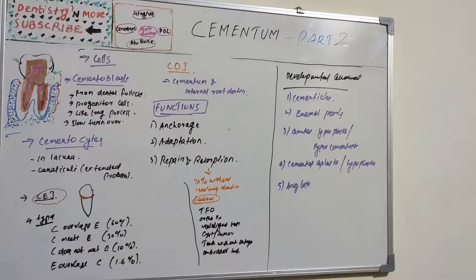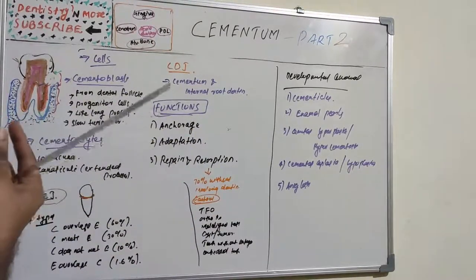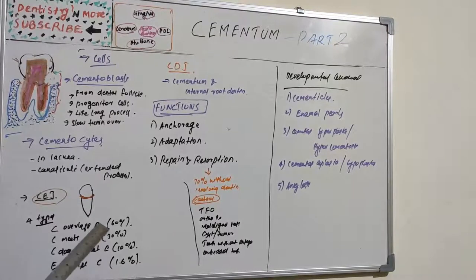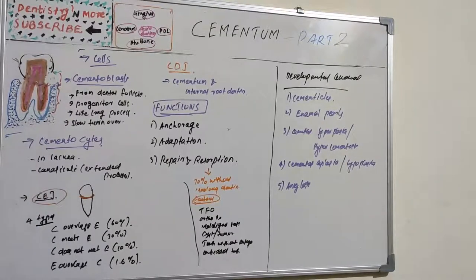Cementicles are small globular masses of cementum found in approximately 35% of molar roots. They may not always be attached to the cementum surface and may appear free in the periodontal ligament. They may result from microtrauma when extra stress on Sharpey's fibers causes a tear in the cementum. They are more commonly found in the apical and middle third of the root and in root furcation areas, and may develop from calcified epithelial rests.